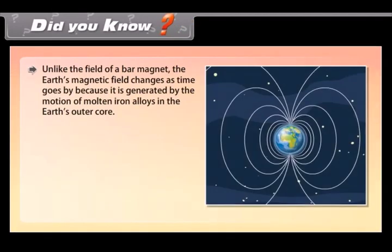Did you know? Unlike the field of a bar magnet, the earth's magnetic field changes as time goes by because it is generated by the motion of molten iron alloys in the earth's outer core.